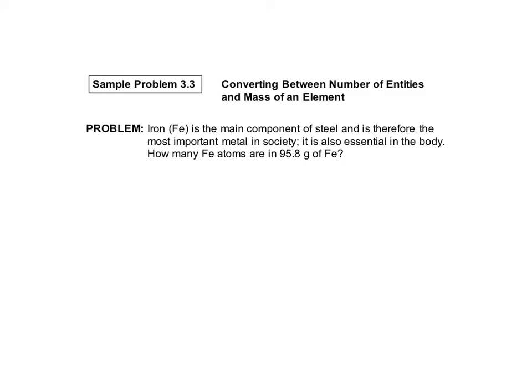Sample problem 3.3 is another conversion problem. It reads, iron is the main component of steel and is therefore the most important metal in society. It is also essential in the body. How many iron atoms are in 95.8 grams of iron?